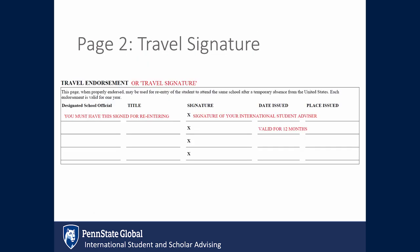Page 2 also contains a travel endorsement or travel signature field. This is required for re-entry into the United States. The signature will be valid for 12 months.